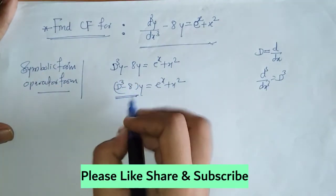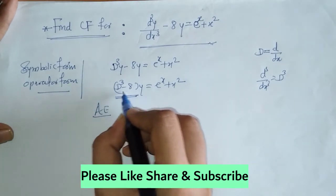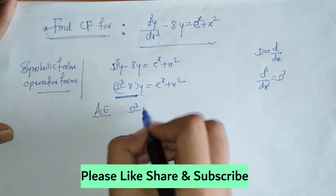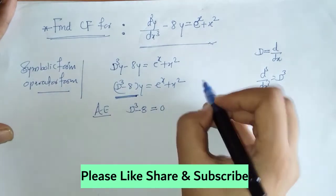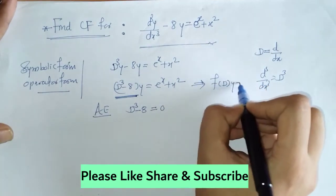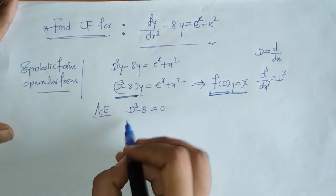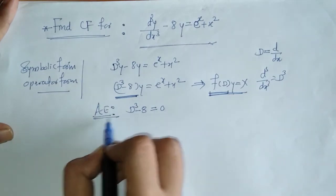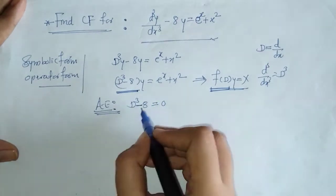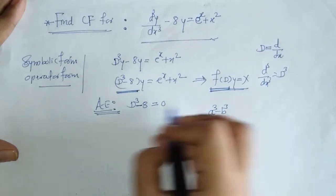Now we have to find the auxiliary equation, which is given by f(D) = 0. We write down this equation in this form, and the auxiliary equation is given by f(D) = 0. Now we have to find the roots of this auxiliary equation. We can check that this is a standard form — this is a cube minus b cube.